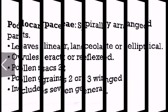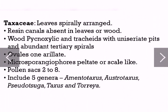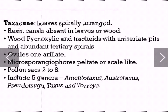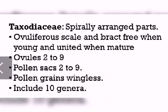Next, the family Taxaceae: leaves are spirally arranged; resin canals are absent in the leaf or wood. Tracheids are uniseriate with abundant tertiary spirals. They produce arillate ovules. The microsporangiophores are peltate or scale-like and contain two to eight pollen sacs. Taxodiaceae: plant parts are spirally arranged; ovuliferous scales and bracts are free when young and united when mature. Ovules range in number from two to nine; pollen sacs also range from two to nine; pollen grains are wingless.